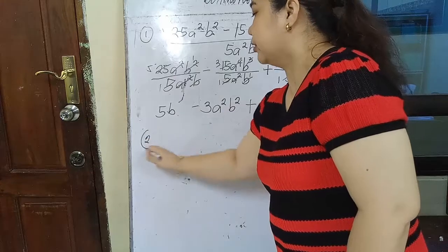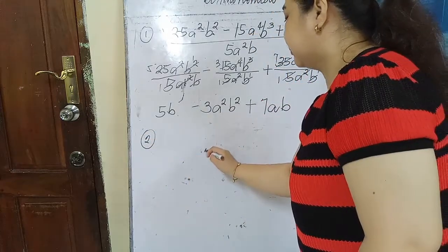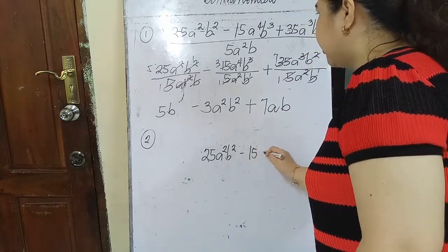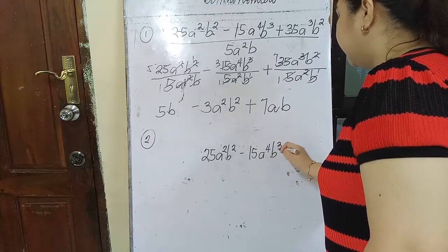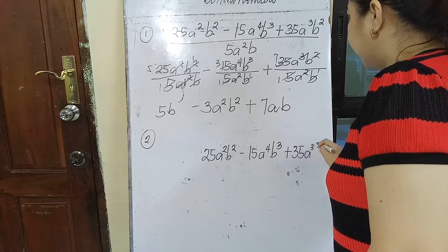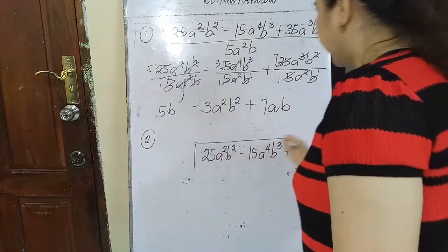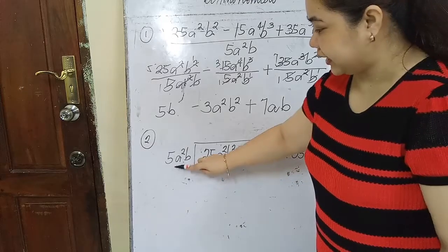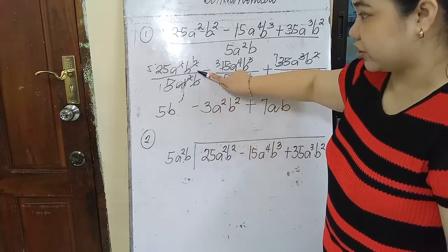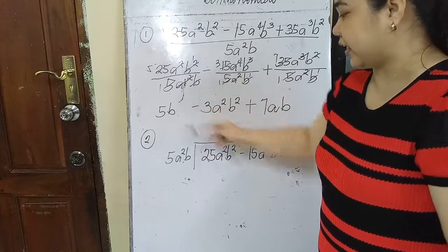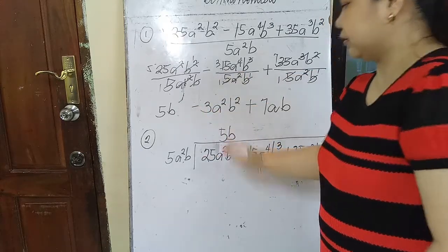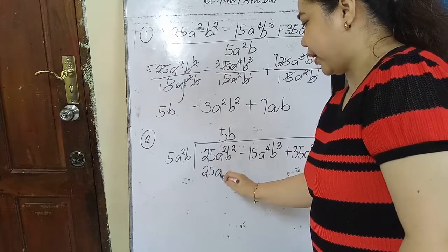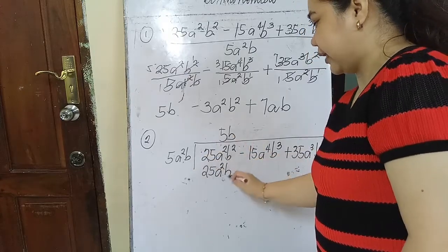Now let's see the second method — long division. The problem is 25a²b² minus 15a⁴b³ plus 35a³b² all over 5a²b. How many times does 5a²b go in? The answer is 5b. Then 5b times 5a²b equals 25a²b², and b times b is b².